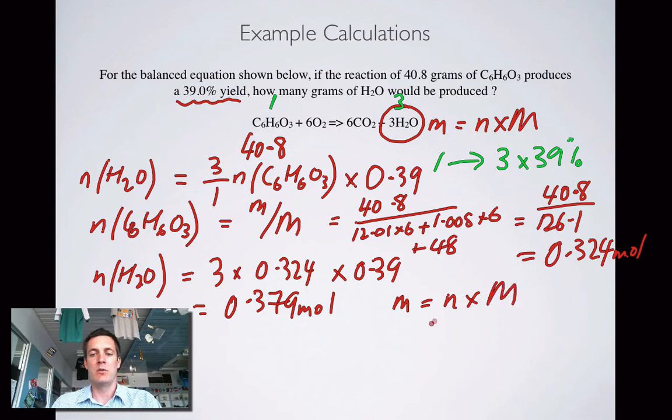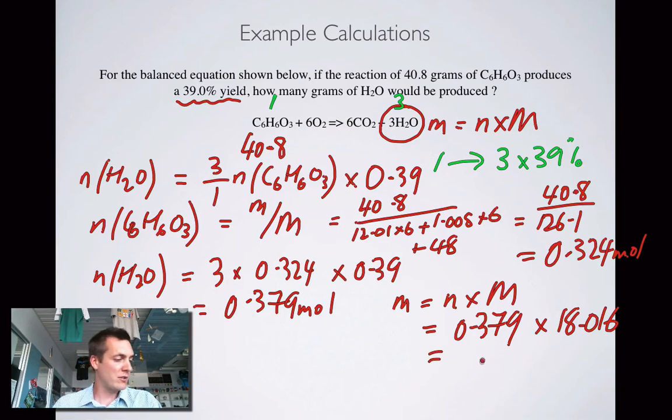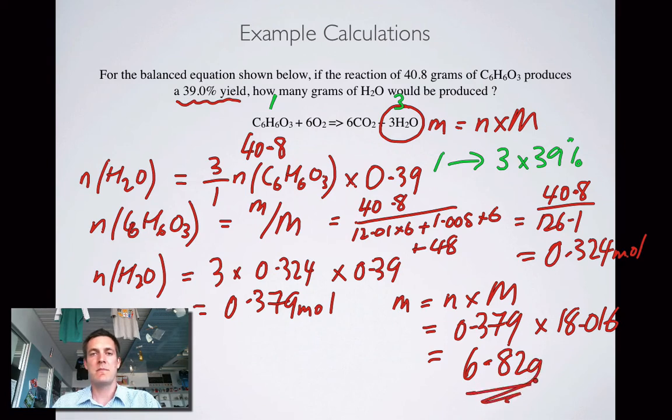We're not asked to find the number of moles of water that form but what mass. So the mass is equal to the number of moles times big M which equals 0.379 multiplied by 18.016 for water, and that equals 6.82 grams.